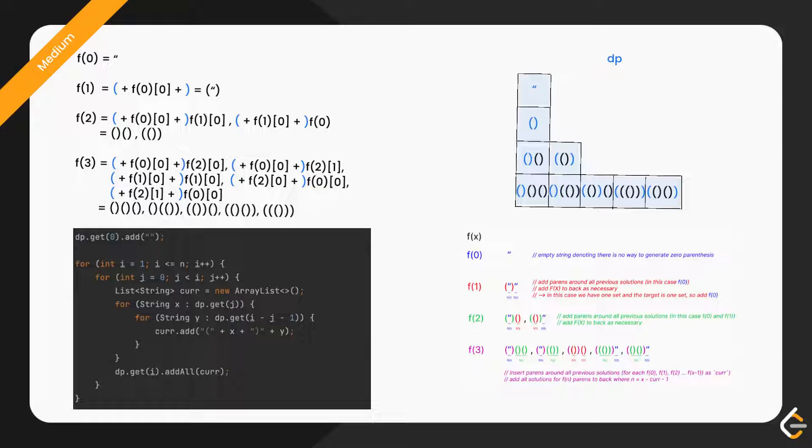For each i, iterate j from 0 to i inclusive. For each x of dp[j], iterate y for each dp[i minus j minus 1]. Add opening parentheses plus x plus closing parentheses plus y to current. Add and keep on adding current result as demonstrated and return result.